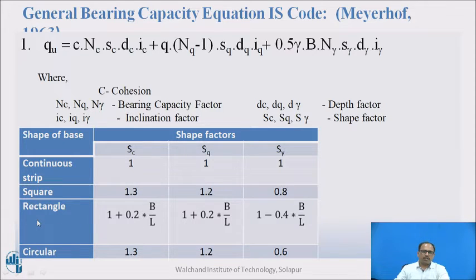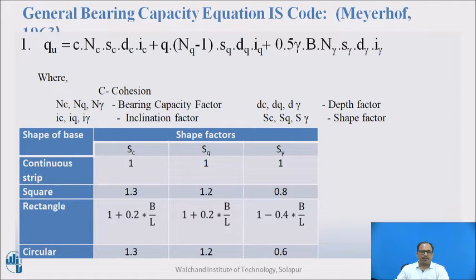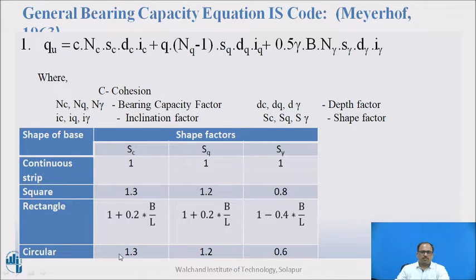For a rectangular footing, Sc = 1 + 0.2·(B/L), where B is the width and L is the length of the footing; Sq is also 1 + 0.2·(B/L), so Sc equals Sq; and Sγ = 1 − 0.4·(B/L). For a circular footing, Sc is 1.3, Sq is 1.2, and Sγ is 0.6.